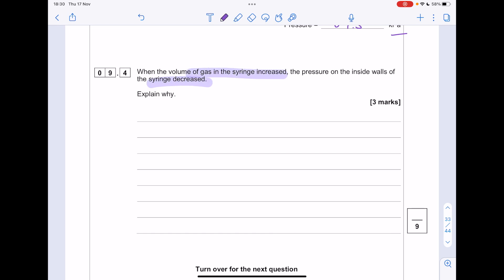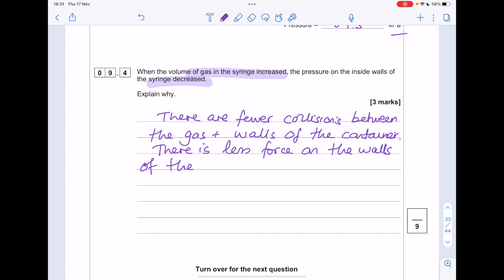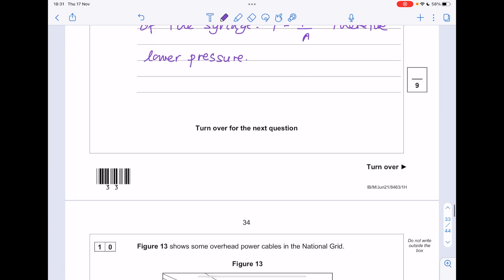When the volume of gas in the syringe increased, the pressure decreased. Explain why. Think about it. It's an answer worth rote learning, to be honest. By increasing the volume, it means that there are less frequent collisions between the particles of gas and the walls of the syringe. And what that means is that there is less force created on the walls of the syringe. And then according to the equation, pressure equals force over area. If you decrease that force, pressure will decrease. Always state an equation where possible.